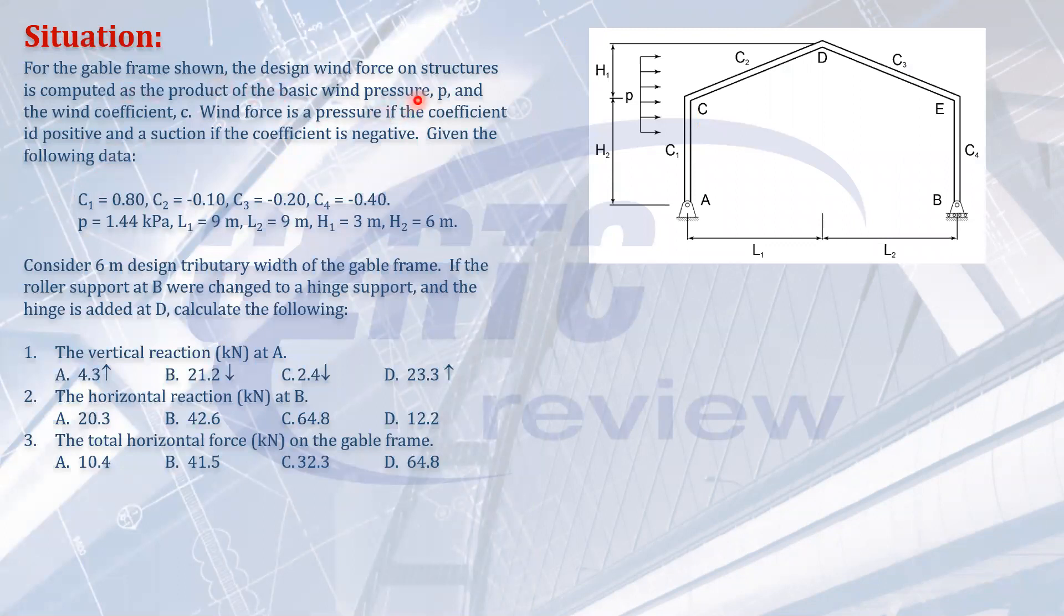For the gable frame shown, the design wind force on the structure is computed as the product of the basic wind pressure P and the wind coefficient C. The wind force is a pressure if the coefficient is positive and suction if the coefficient is negative. Pressure acts towards the structure, suction acts away from the structure. Given: C1 is 0.8, C2, C3, C4 are negative, and the basic wind pressure is 1.44 kilopascals.